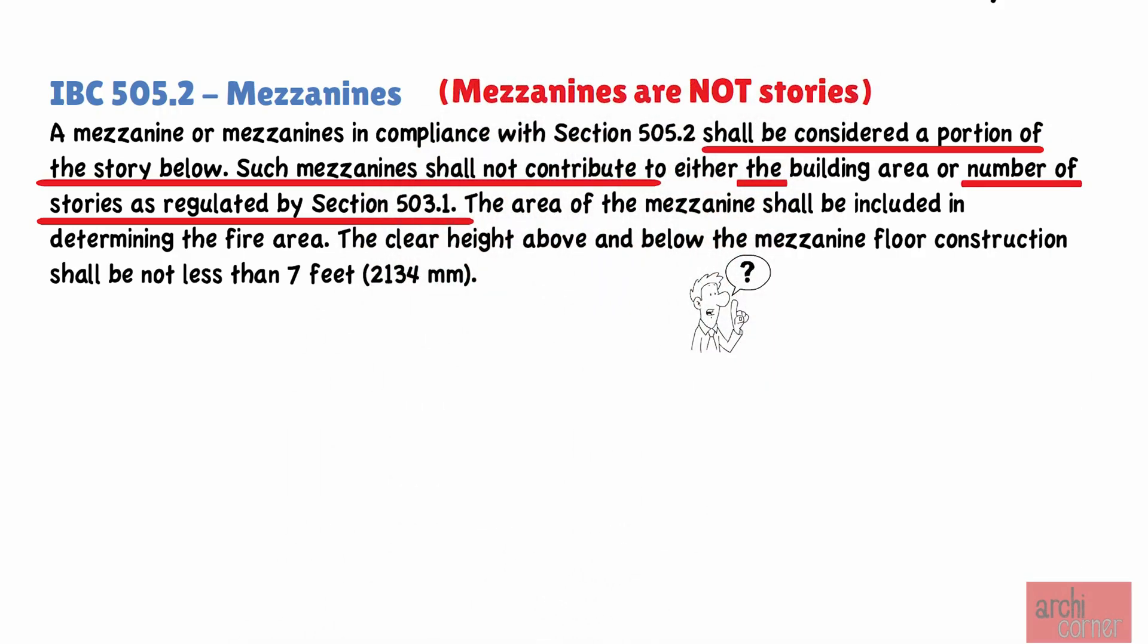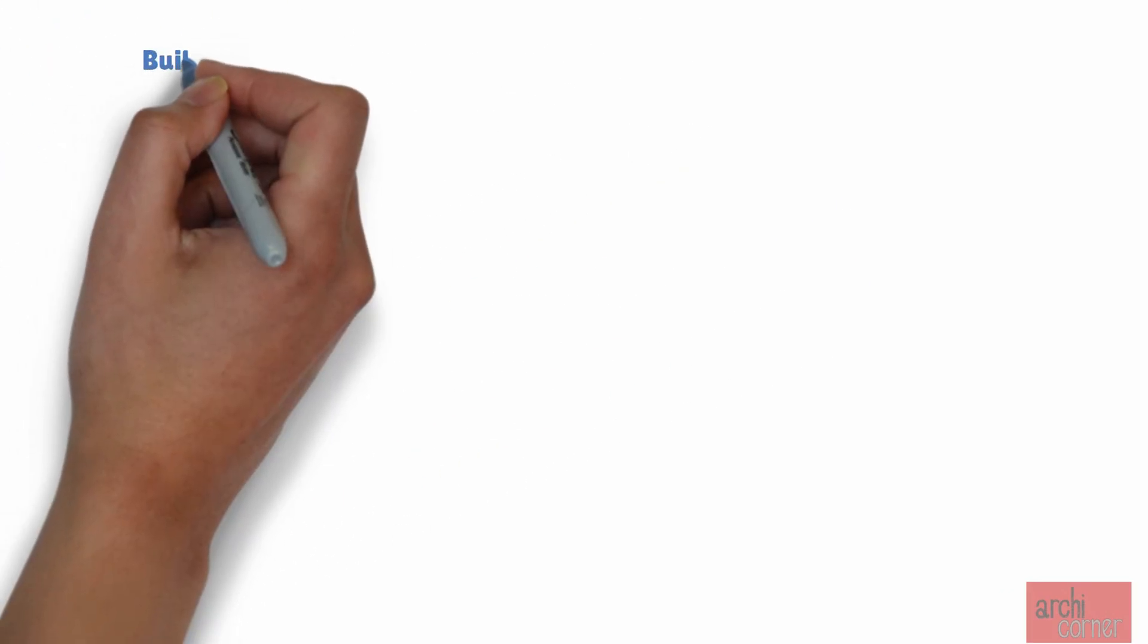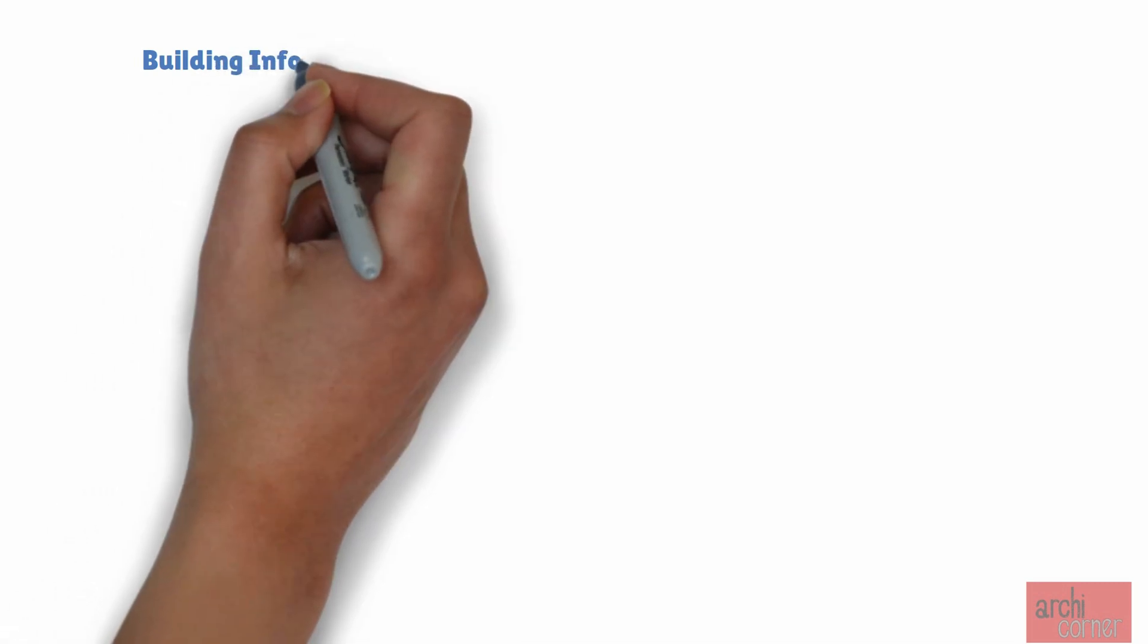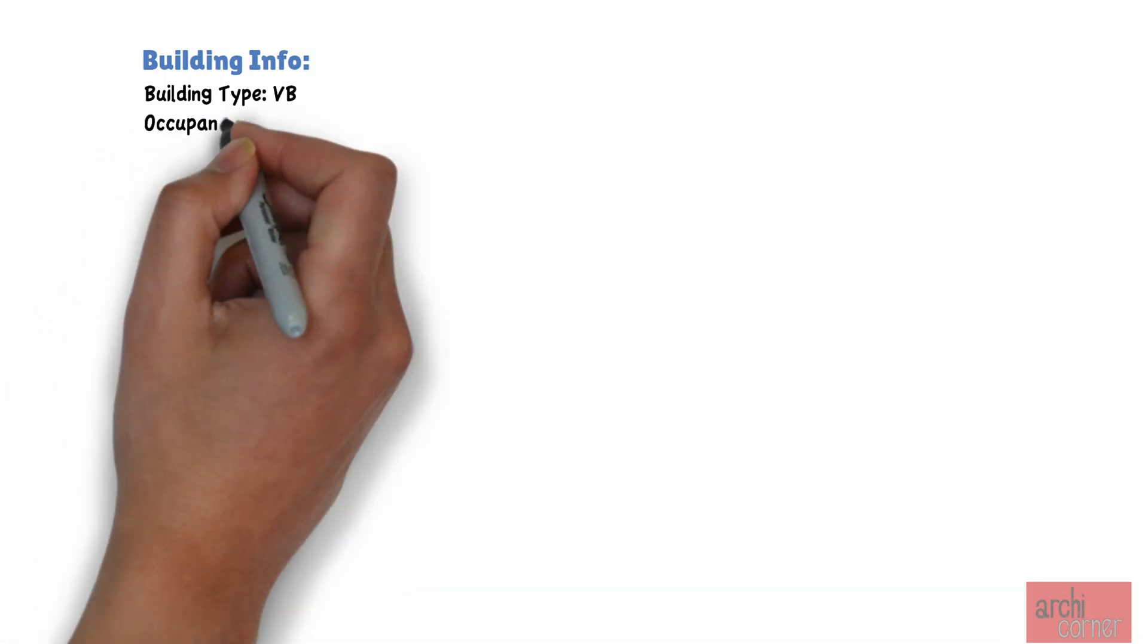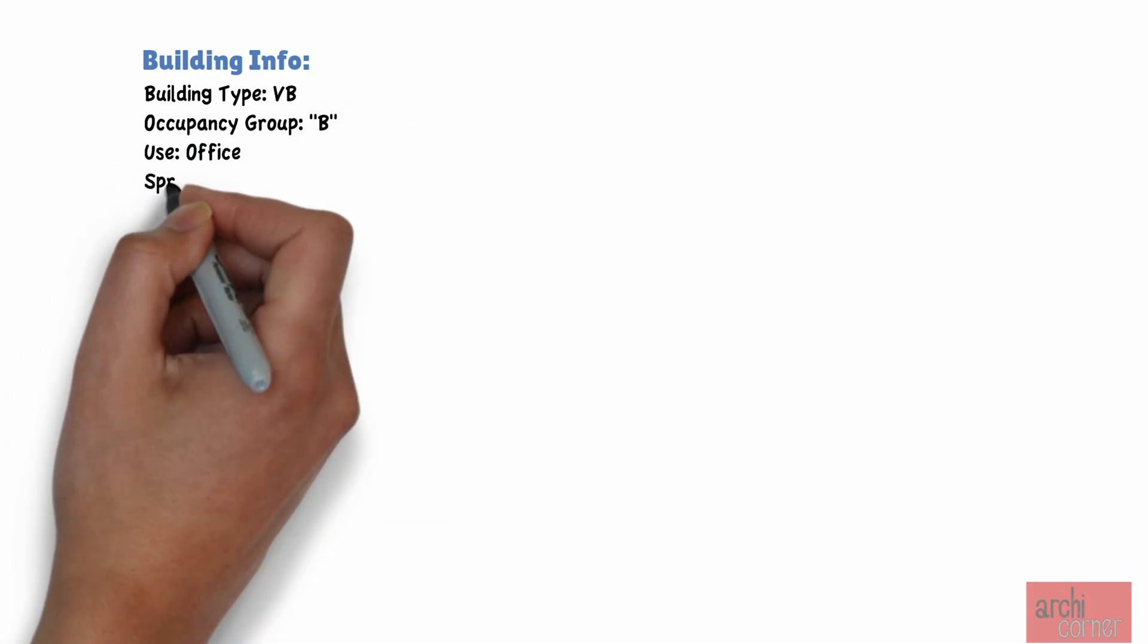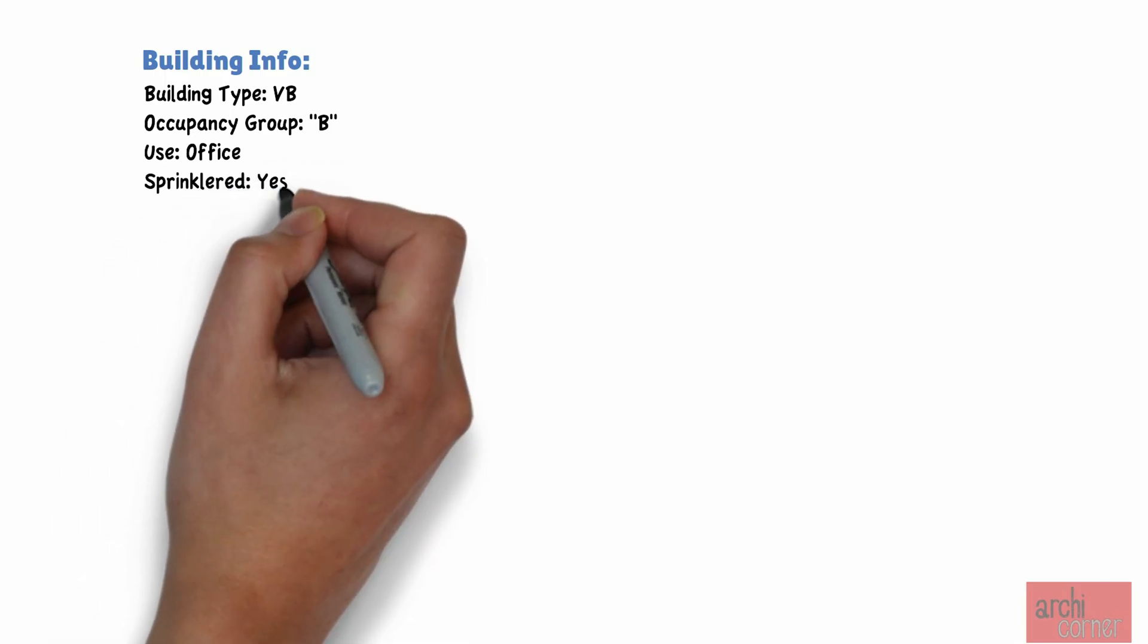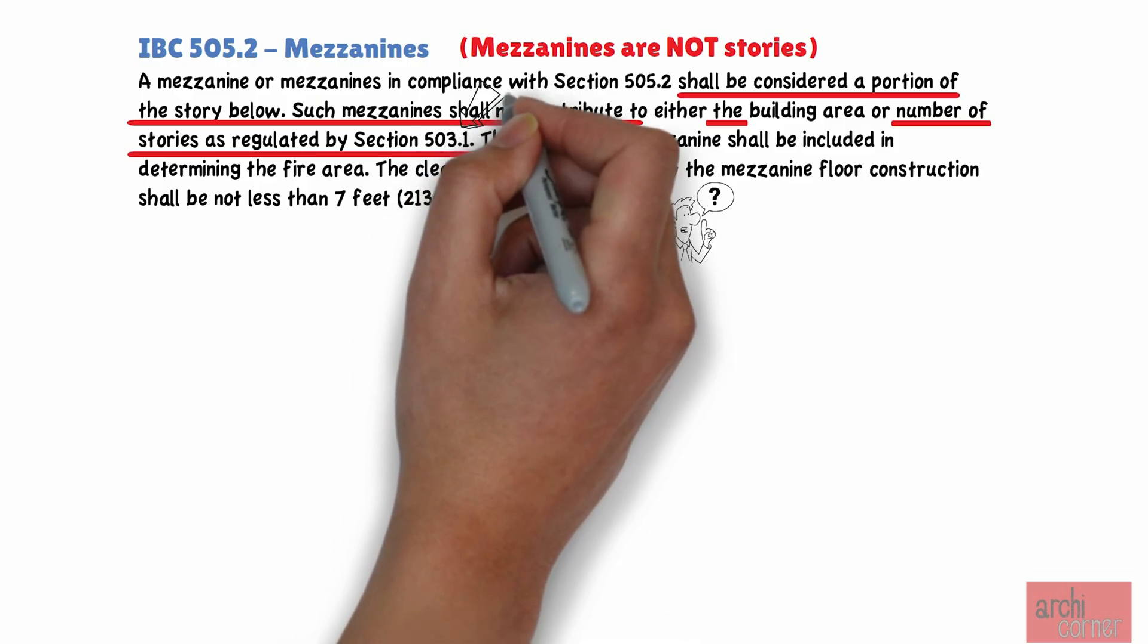Why is this important? To answer this, we must go through the basic process of figuring out what is allowed for stories and mezzanines. For this example, let's assume that we have a Type 5B building with an occupancy group classification of B. It is used for office and it is sprinklered. First, let's find out how many stories a regular building with these requirements is allowed.